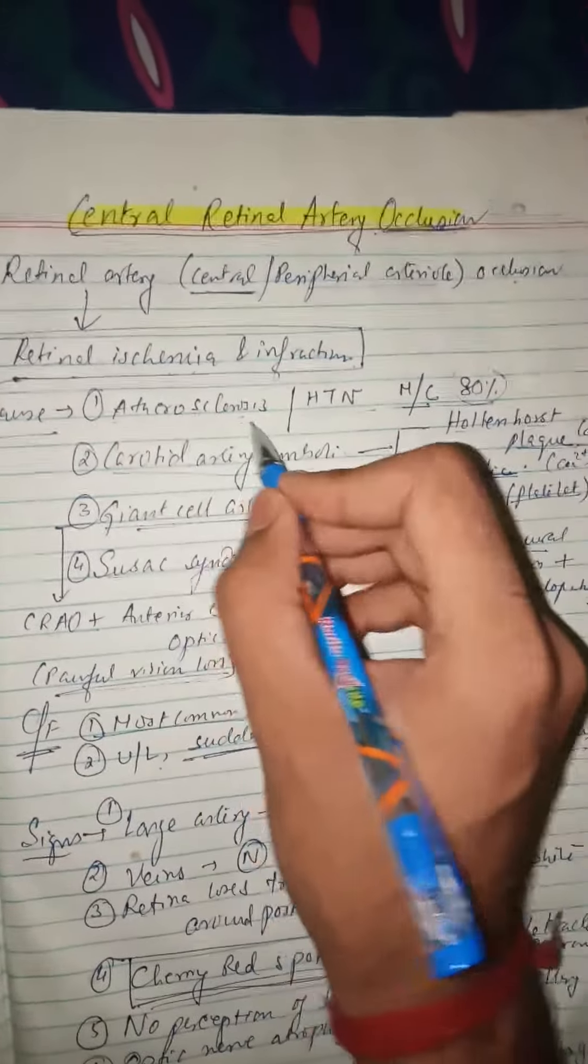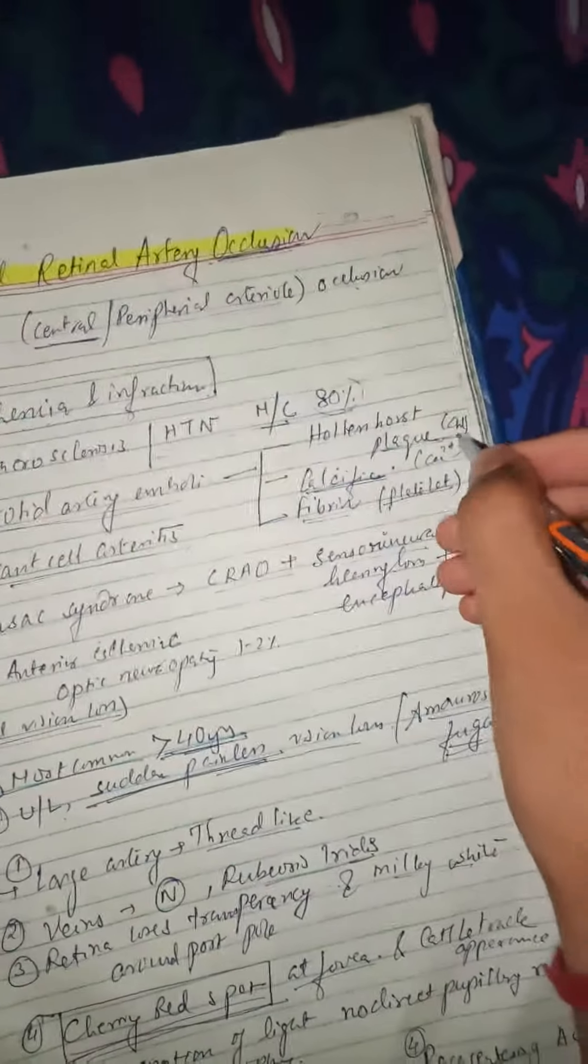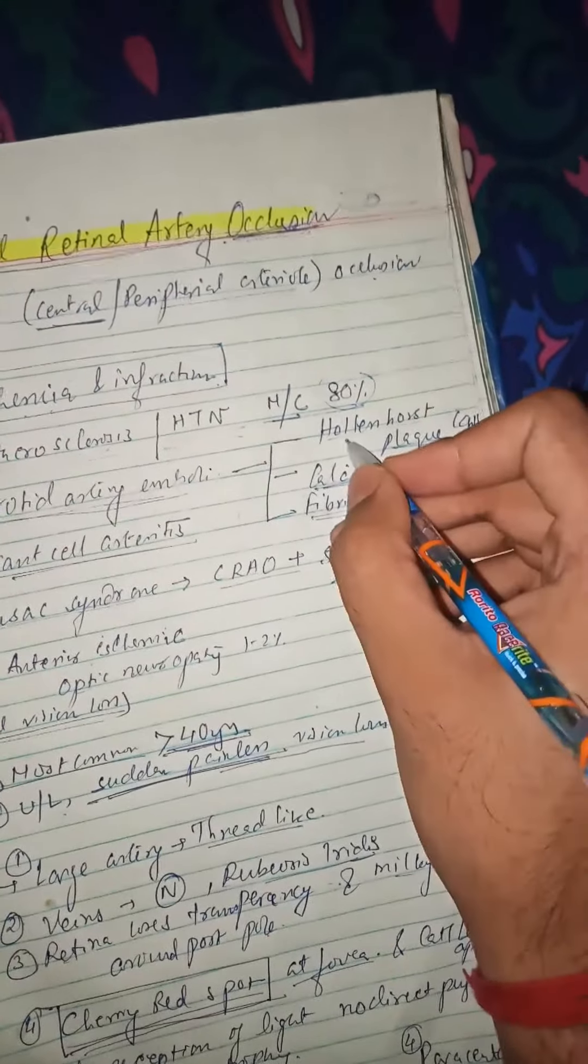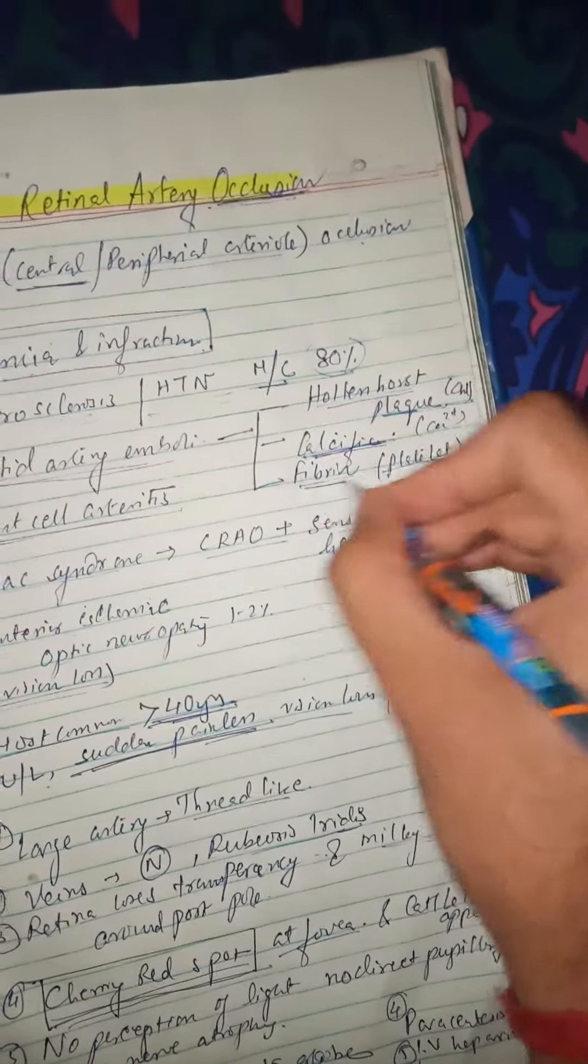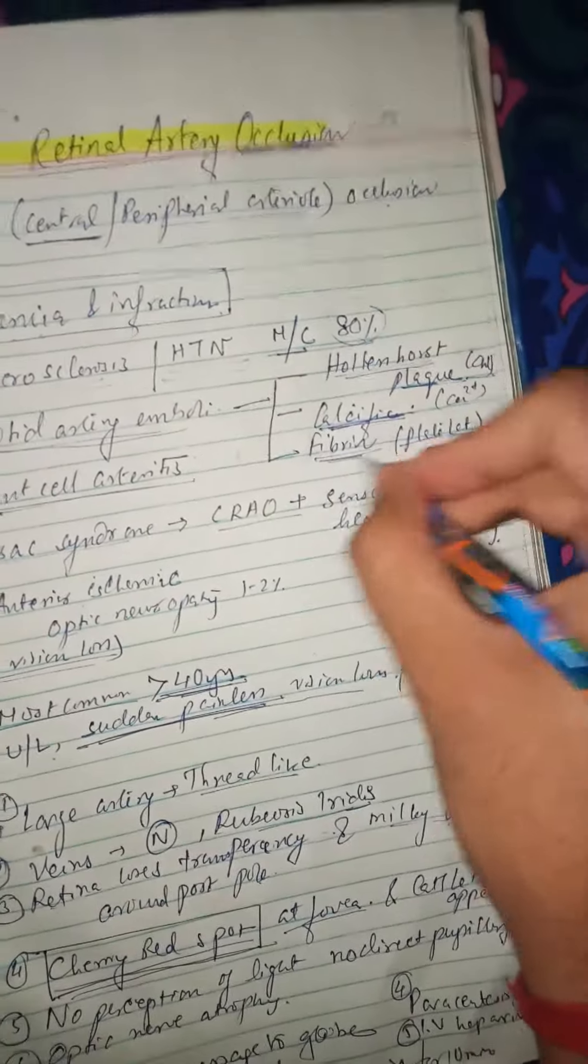So what is the cause? First cause is atherosclerosis or hypertension, the most common cause in 80% of cases. Carotid artery embolism, which can be a cholesterol plaque known as Hollenhorst plaque. Calcific calcium deposition can be there, or it can be platelet deposition or fibrin.